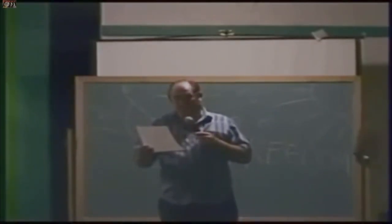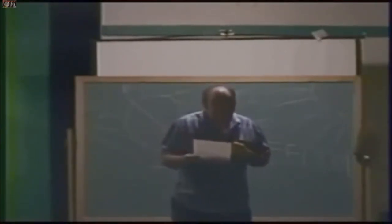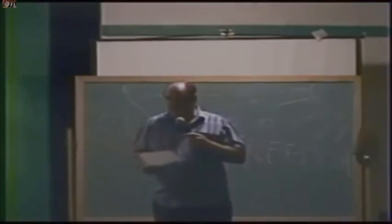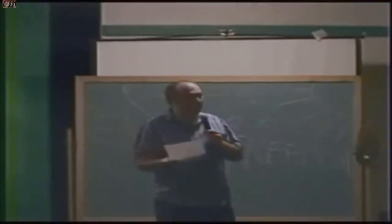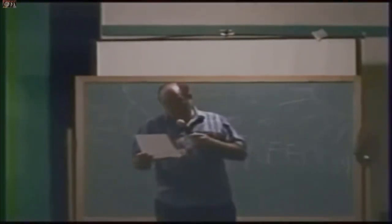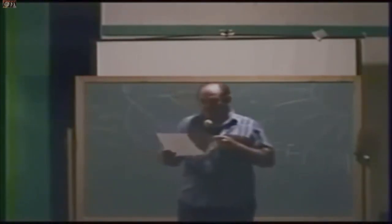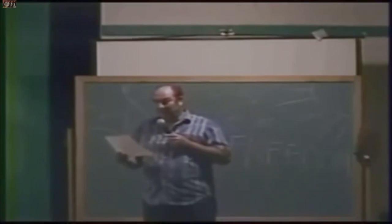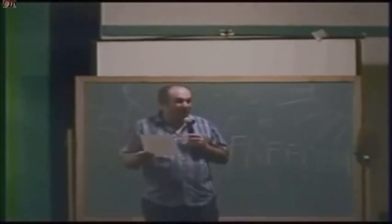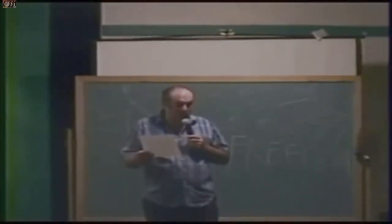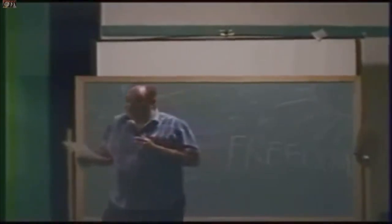Toffler says in the third wave, it requires governments that are simpler, more effective, yet more democratic than any we know today. What's that a code word for? Socialist. It is a civilization with its own distinctive world outlook, its way of dealing with time, space logic, and causality. What's that mean? World outlook? World government. World control. Causality? Social engineering.